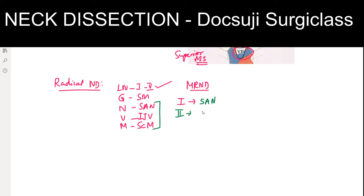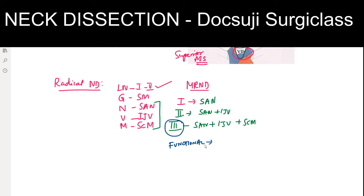In MRND Type 2, you preserve two structures: the spinal accessory nerve plus the internal jugular vein (IJV). In MRND Type 3, you preserve all three structures: the spinal accessory nerve, IJV, and sternocleidomastoid muscle. Type 3 is otherwise called functional neck dissection, commonly indicated in papillary carcinoma of the thyroid alongside total thyroidectomy. MRND is also called Bocca's neck dissection.